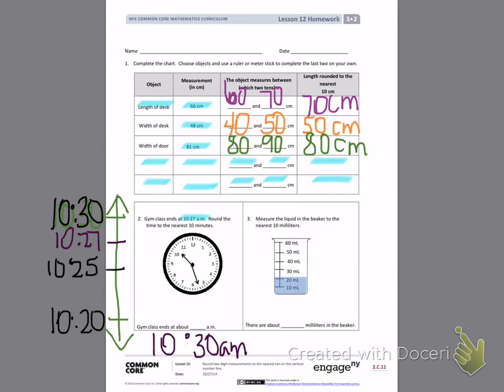Number three, measure the liquid in the beaker to the nearest 10 millimeters. If I look at my beaker, I can see that it's ending here between 20 milliliters and 30 milliliters. The water is very low. It's closer to my bottom measurement. So I'm going to say there are about 20 milliliters in the beaker.